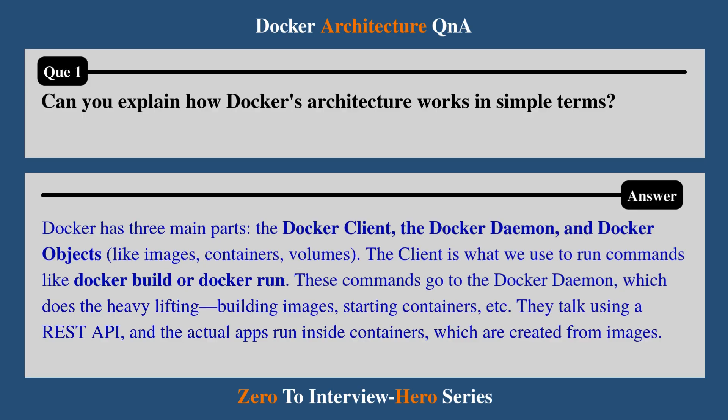Question 1: Can you explain how Docker architecture works in simple terms? Docker has three main parts: Docker client, Docker daemon, and Docker objects like images, containers, and volumes. The client is what we use to run commands like Docker build or Docker run. These commands go to the Docker daemon, which does the heavy lifting — building images, starting containers, etc. They talk using REST API, and the actual apps run inside containers which are created from images.